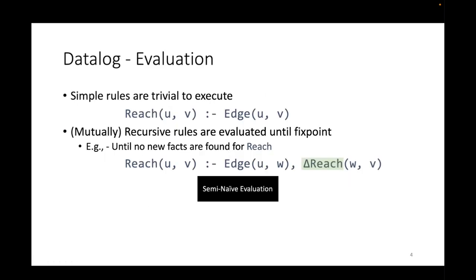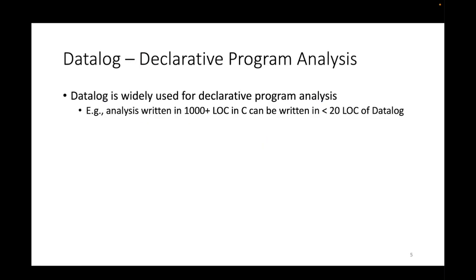How do these rules get evaluated? Simple rules that are not recursive are trivial to execute - you execute the body of the rule, derive the corresponding facts, and insert them to the relation on the head. For recursive rules or mutually recursive rules, these are evaluated until we reach a fixed point. For example, the second rule of the reachability example is a recursive rule and will be executed until we reach a fixed point for the reach relation. The algorithm used to evaluate this is called semi-naive evaluation. The idea here is that for recursive relations you only consider the facts derived in the immediate previous iteration.